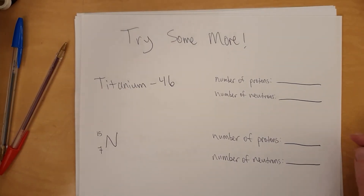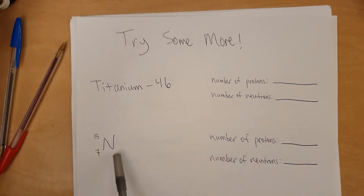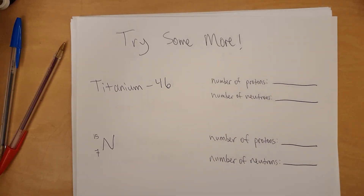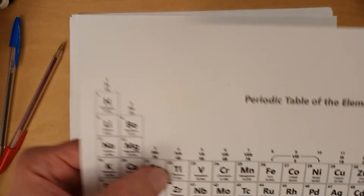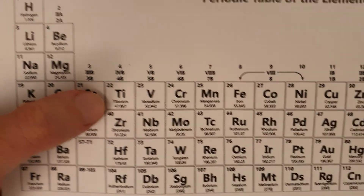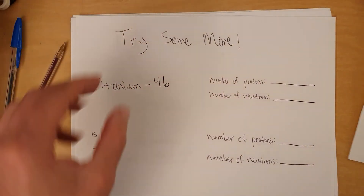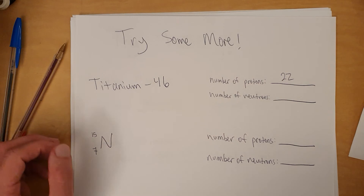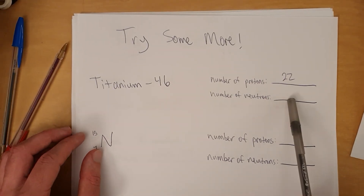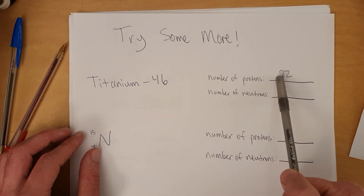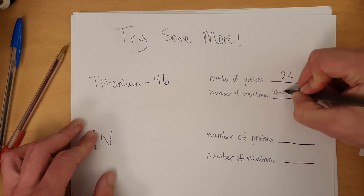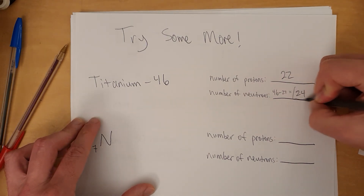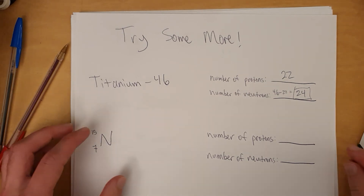Let's go the other way — if I give you a name or a symbol, can you find the number of protons and neutrons? For titanium-46: titanium is element number 22, so it has 22 protons. To find neutrons, use mass number minus atomic number — so 46 minus 22 equals 24 neutrons.